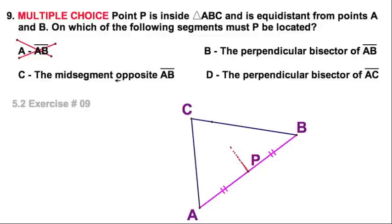Well, let's look at C since it's just down here. The mid-segment opposite AB. Well, the mid-segment opposite AB would be right there. And certainly P could be on it. It could be on the mid-segment. But it might be off it, like right there. So I'm going to have to say this is a sometimes. And that means no.